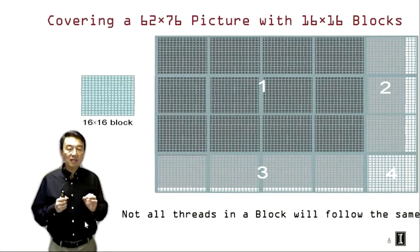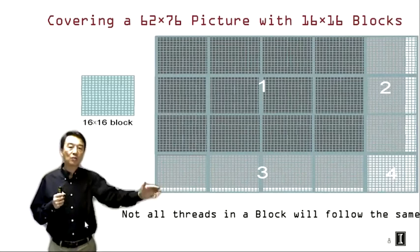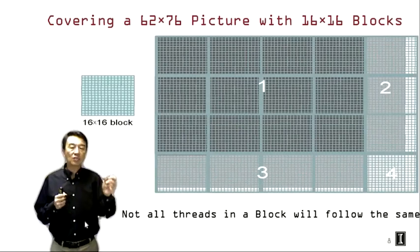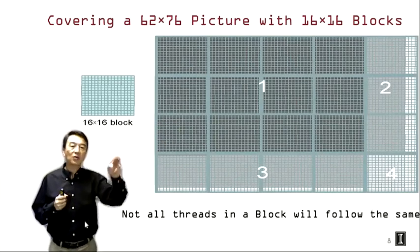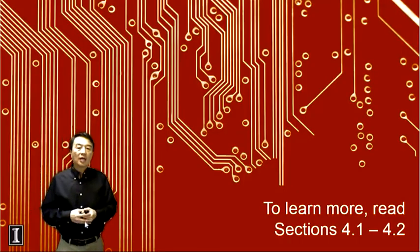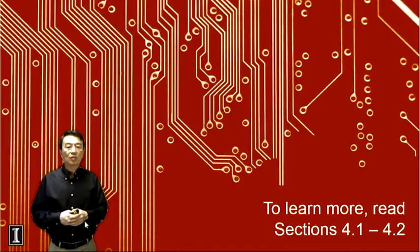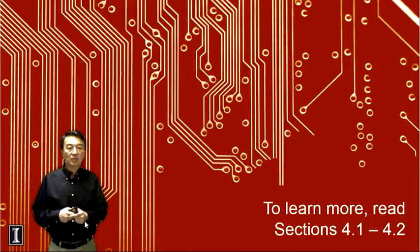This is an important picture to remember when we begin to discuss performance implications. Whenever we process a two-dimensional picture and use boundary checks to verify whether each thread's y-index or x-index is within the valid range, we will end up with these four possible cases. This brings us to the conclusion of this lecture. For those of you who would like to understand more about the material, I encourage you to read sections 4.1 and 4.2 of the textbook. Thank you.